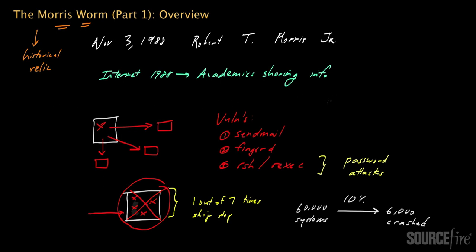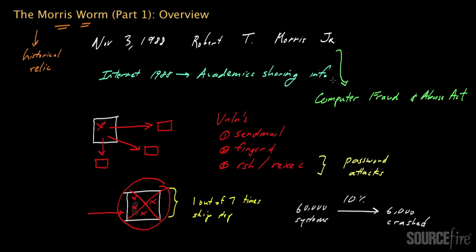Ultimately, Robert Morris Jr. was convicted on a single felony count of violating the Computer Fraud and Abuse Act of 1986, and he was actually the first person convicted in the United States under this Act. His ultimate sentence after appeals was three years of probation, 400 hours of community service, and a $10,000 fine.